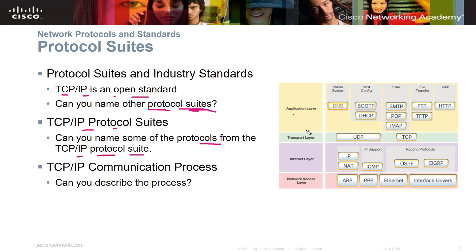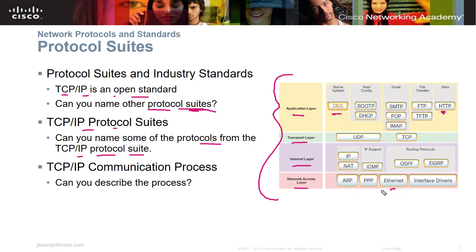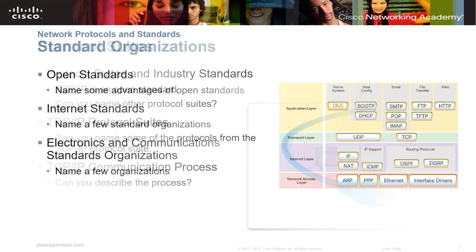The TCP/IP model has four layers: application, transport, internet, and network access. At the application layer you have protocols like DNS, FTP, and HTTP. At the network access layer you have Ethernet for transmitting across the medium. You'll want to look up the TCP/IP communication process in your course reading material.